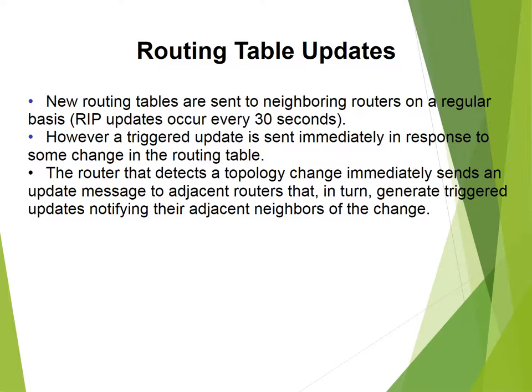Routing tables are sent to a neighboring router on a regular basis — a RIP update is sent every 30 seconds. However, a triggered update is sent immediately in response to some change in the routing table. The router that detects a topology change immediately sends an update message to an adjacent router.